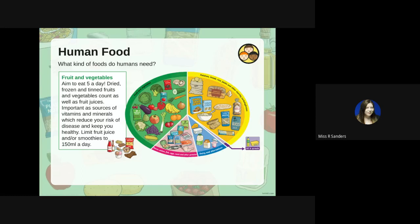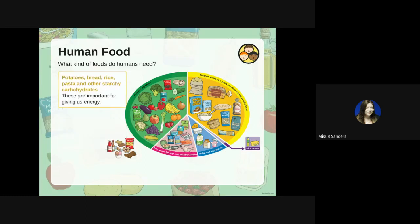Our next category is carbohydrates — potatoes, bread, rice, pasta, and other starchy carbohydrates. These are the things that give us energy, so we need them to be able to run around the playground or the park, and to get up in the morning — basically everything we need energy for.